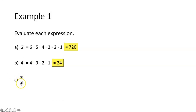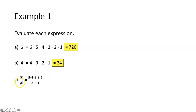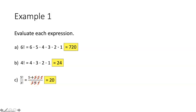Part C — five factorial over three factorial. Expanding the numerator: five times four times three times two times one. Denominator: three times two times one. The threes, twos, and ones all cancel out, leaving five times four over one, which is 20.